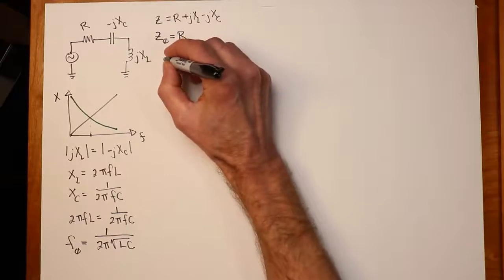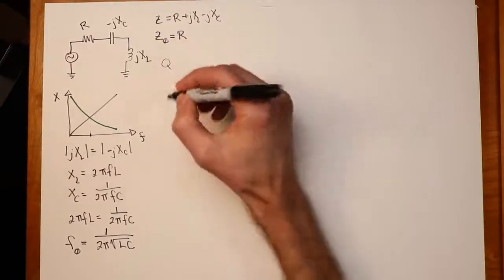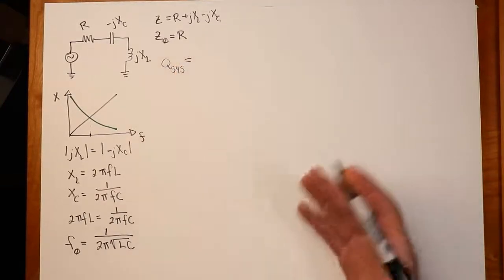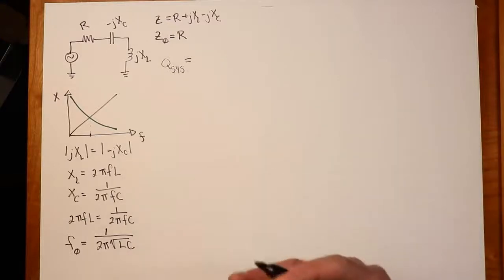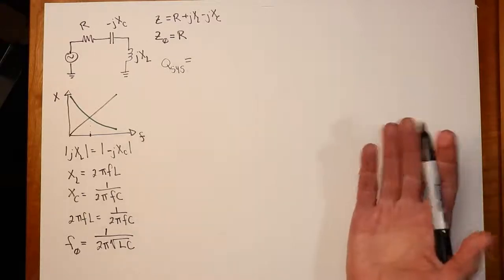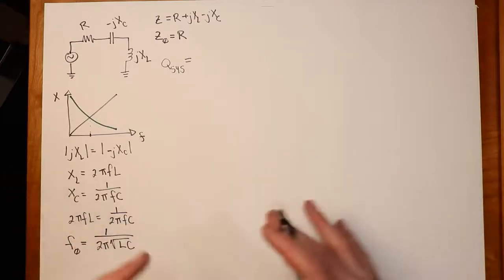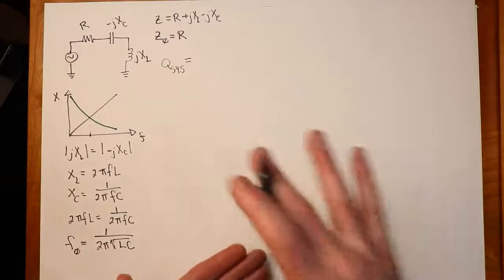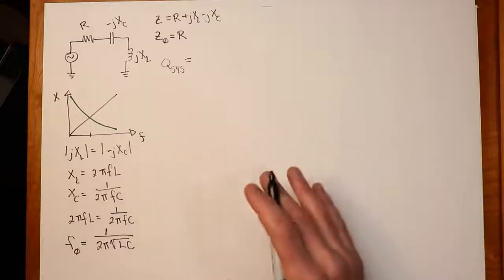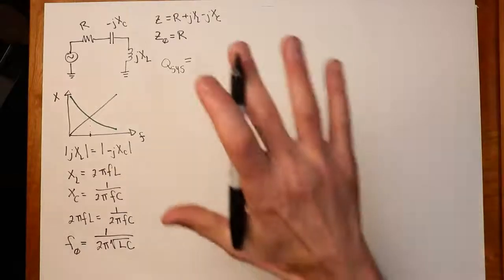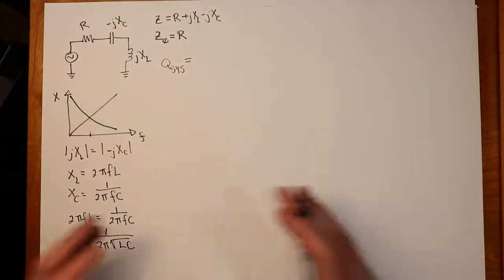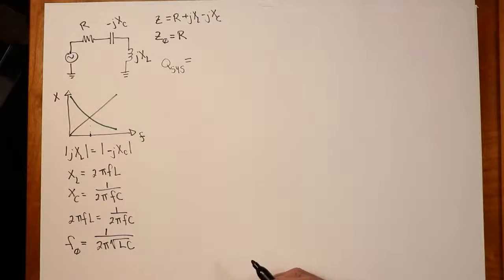Now, an important characteristic is what we call the Q of the system. The Q of the system, Q stands for quality factor, and mechanical systems and some electrical systems refer to something called damping, which is essentially the reciprocal of Q. The damping in your car's suspension. If it's good damping, it's a well-damped, well-controlled swing. You don't hit a bump and it just keeps on bouncing. It just does one nice little thing and off you go. So, that's a highly damped system.